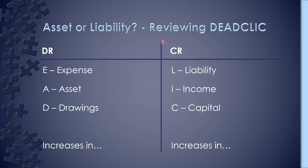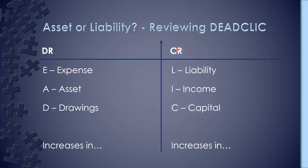The little arrow reminds you on what basis you're putting things into an account — if something is increasing, you can apply DEAD CLIC. For example, if you buy stationery for £10, the stationery expense account increases so you debit it; if you return the paper, the expense decreases so it's a credit. Likewise, if you increase an asset it's a debit; increase drawings it's a debit. If you owe more VAT to HMRC, the liability increases so you credit that account. More sales means you credit your sales account, and more capital invested is credited to the capital account.